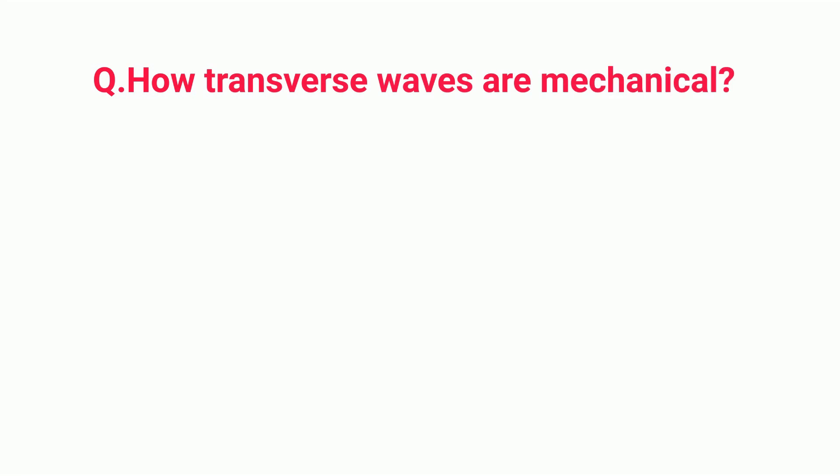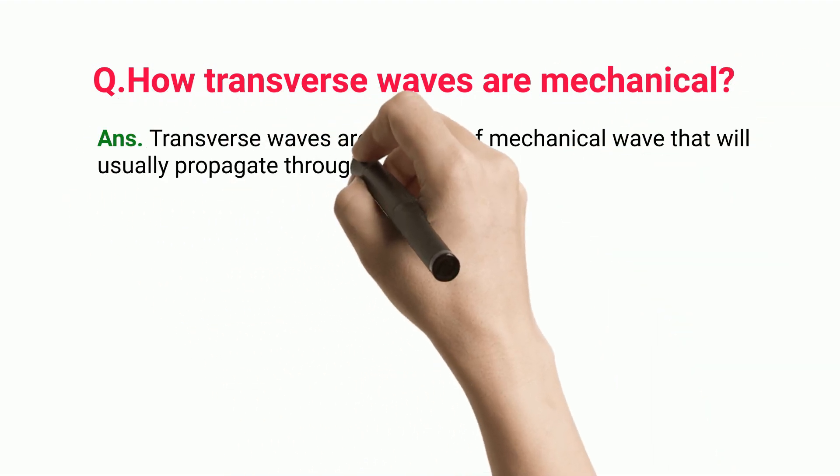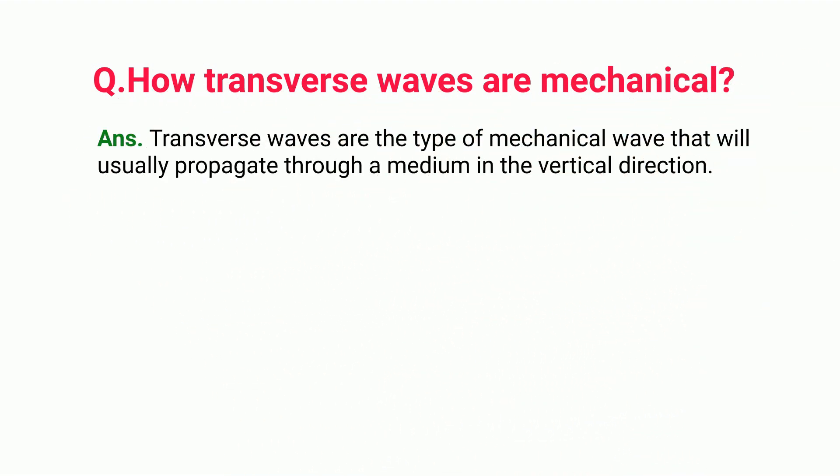How transverse waves are mechanical. Transverse waves are the type of mechanical wave that will usually propagate through a medium in the vertical direction.